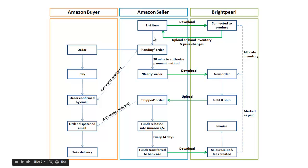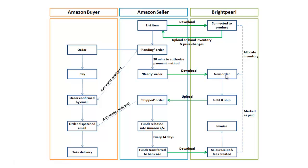As soon as a customer has an order ready — in other words the payment has been authorised — it's downloaded into Brightpearl as a new order. Any available inventory is allocated to this order, which means it's not available for other sales channels. You then fulfil and ship this order in Brightpearl, and Brightpearl tells Amazon that the order has been shipped.